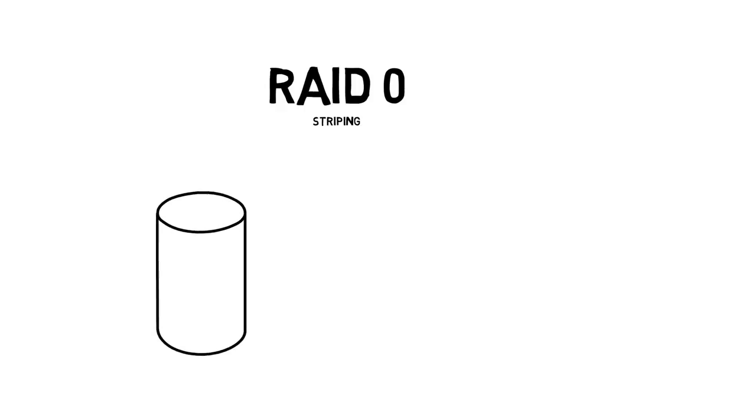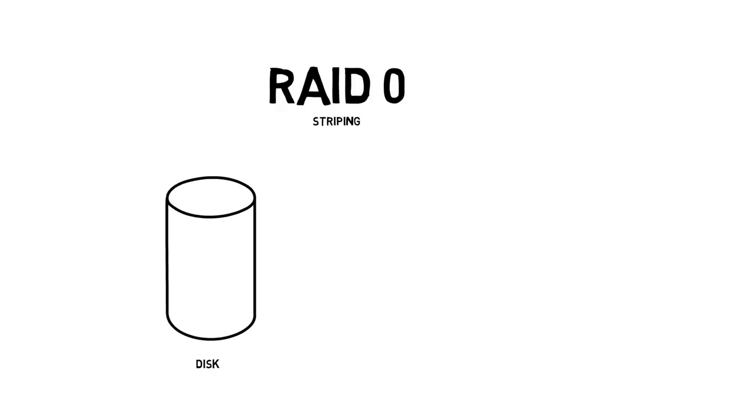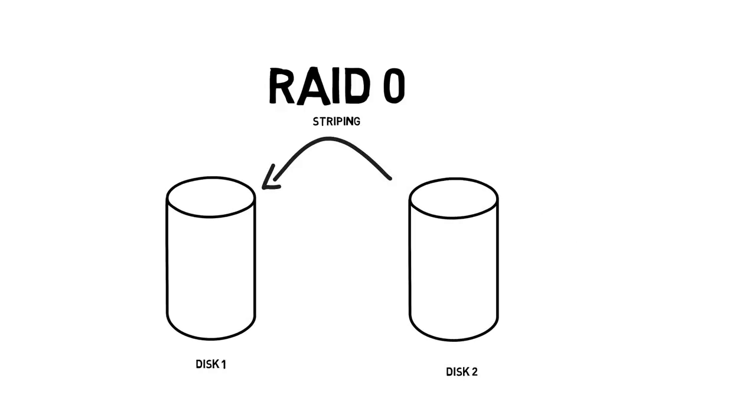So let's start with RAID 0, the simplest of all these configurations. We're going to look at RAID 0, RAID 1, RAID 5, and RAID 10. RAID 0 starts with two discs in which the data is interleaved between the two discs.